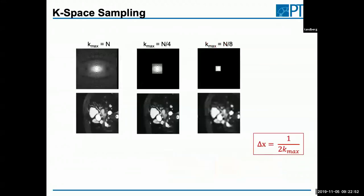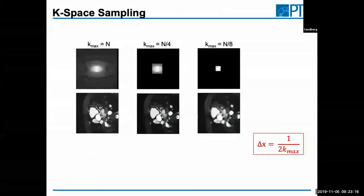Here's an example of what happens if we don't fulfill these requirements. Starting with the full image — K-space filled to the highest frequencies — if we take only smaller parts and don't sample the high frequencies, you just lose the details. If you don't have enough high frequencies, you cannot encode sharp transitions and small details, so you get a blurry image.